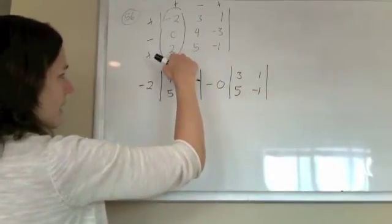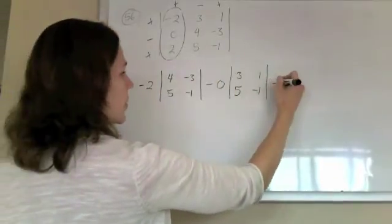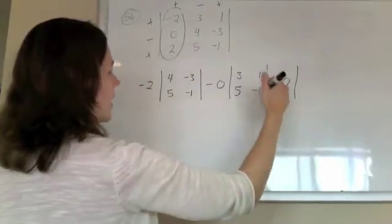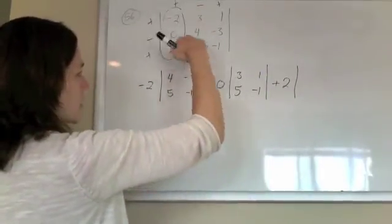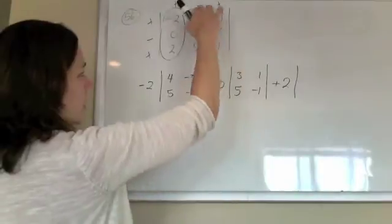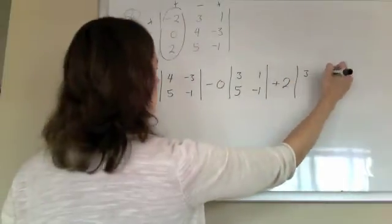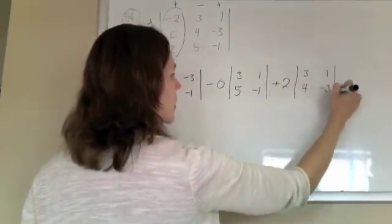Move down to the last guy, I'll be a positive 2, and if I cross out his row and his column, I'm left with 3, 1, 4, negative 3.